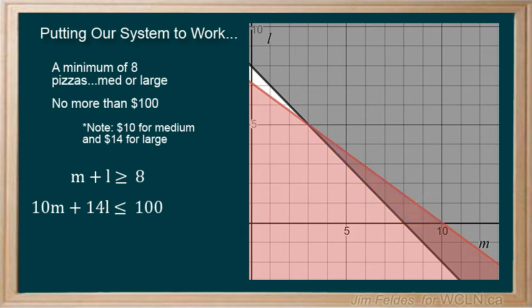Perhaps the most obvious point is (3,5), maximum value for sure with the greatest number of large pizzas. Or (10,0) for the greatest variety with 10 mediums. Any discrete value in the shaded area would work.